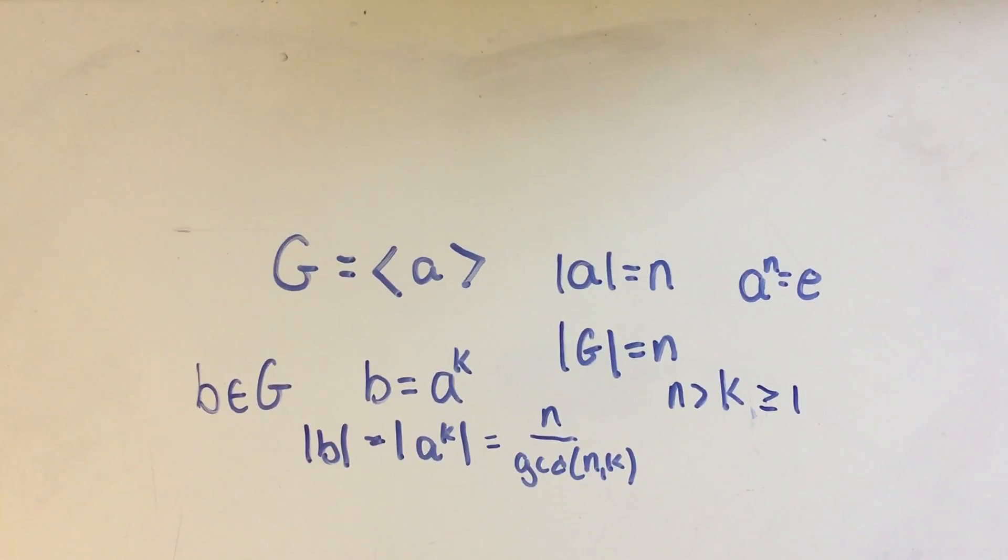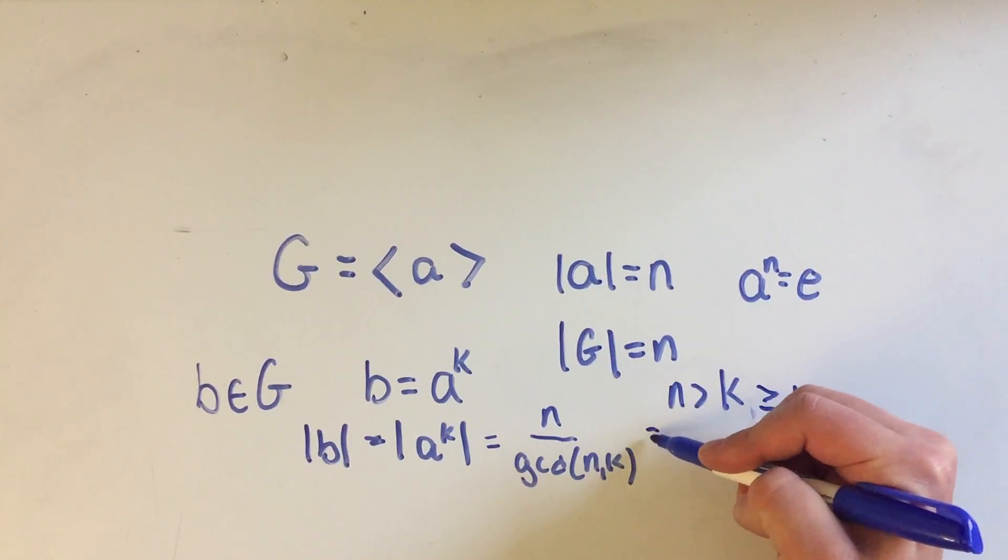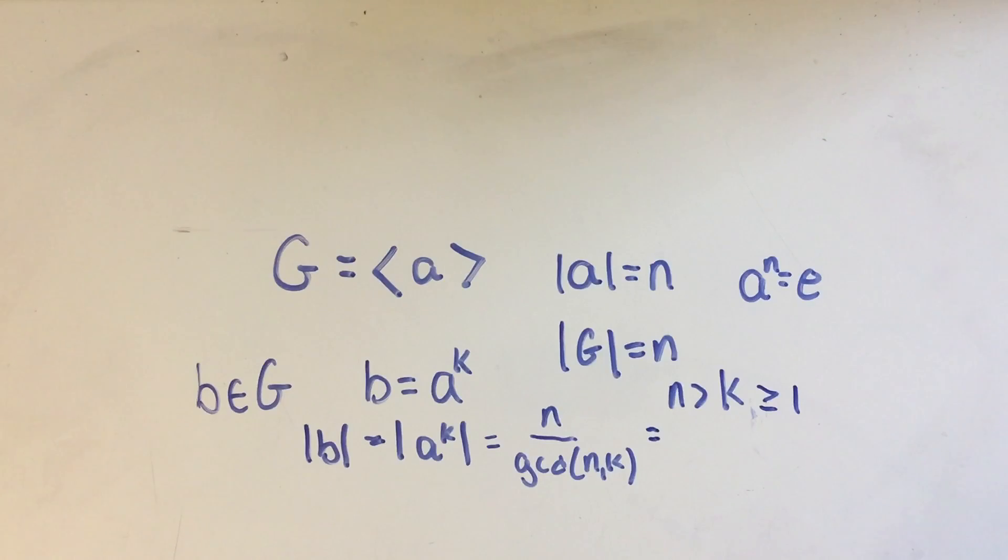That's just a very important theorem that's used for a lot of proofs. So, let's see. N divided by the GCD of N and K. That's just going to be a number, right? It's going to be a whole number. I'll call it J. Where J is in natural numbers.